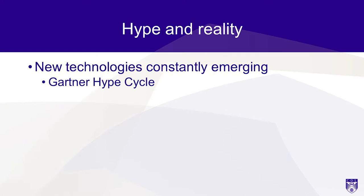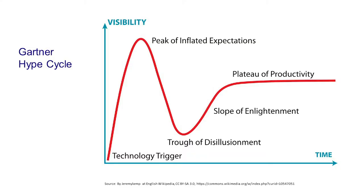New technologies are constantly emerging and the Gartner Consulting Company has come up with a very useful graph that gives a general overview of what happens when new technology comes in. When new technology arrives it gets a lot of hype and publicity, and it reaches what's called a peak of inflated expectations — people make claims for it that in reality just don't turn out.